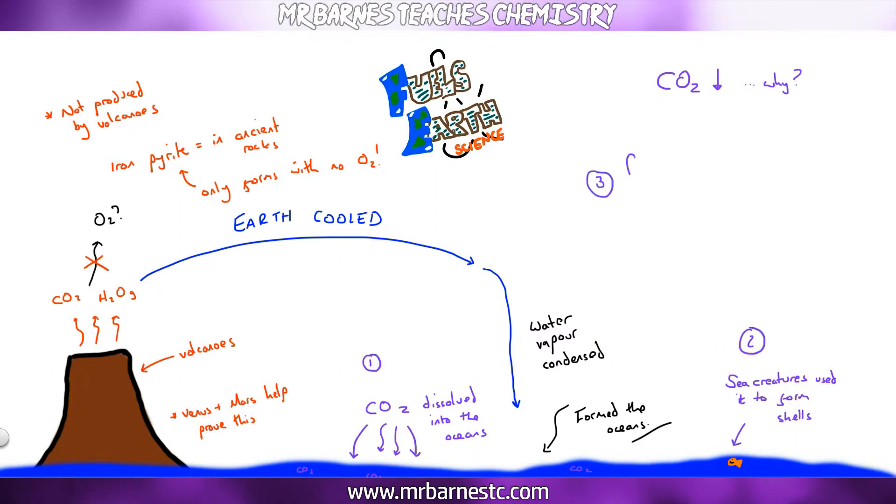And then finally, plants started to evolve. You've guessed it, photosynthesis occurred. So carbon dioxide was taken in and oxygen was produced.